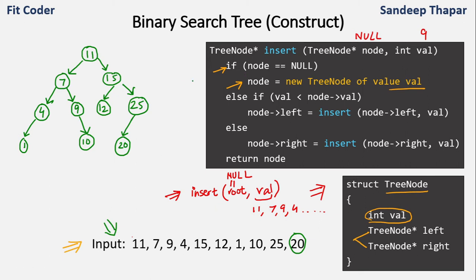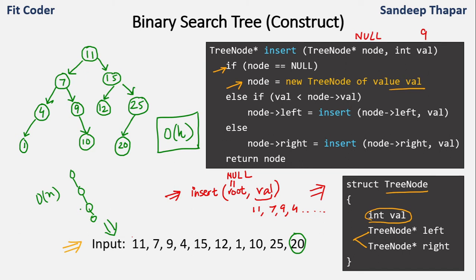The time complexity of inserting a node in a BST is O(h), where h is the height of the tree. The worst-case complexity can be O(n) because the tree can be skewed, where h equals the number of nodes. But the average complexity is O(h) where h is the height of the tree.